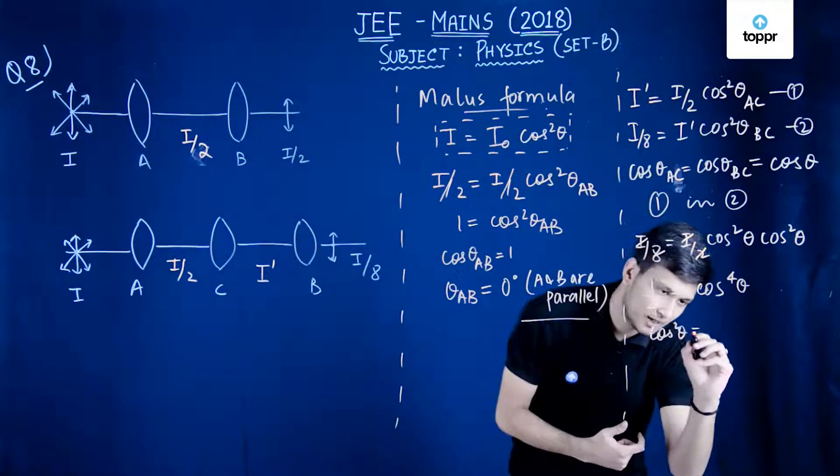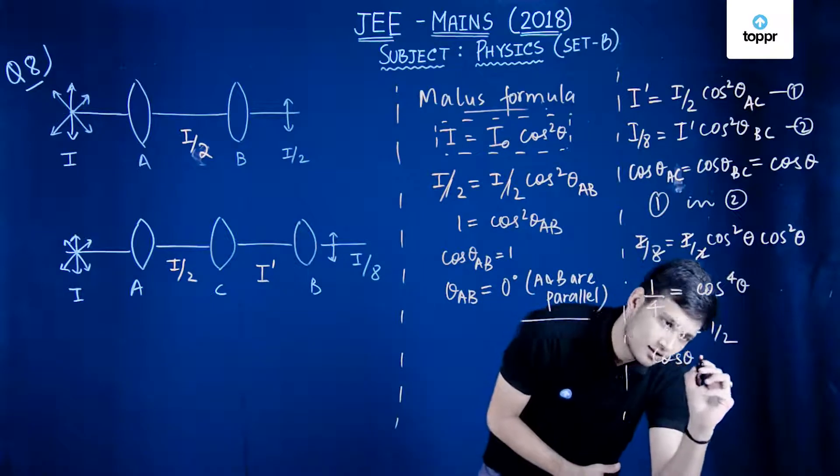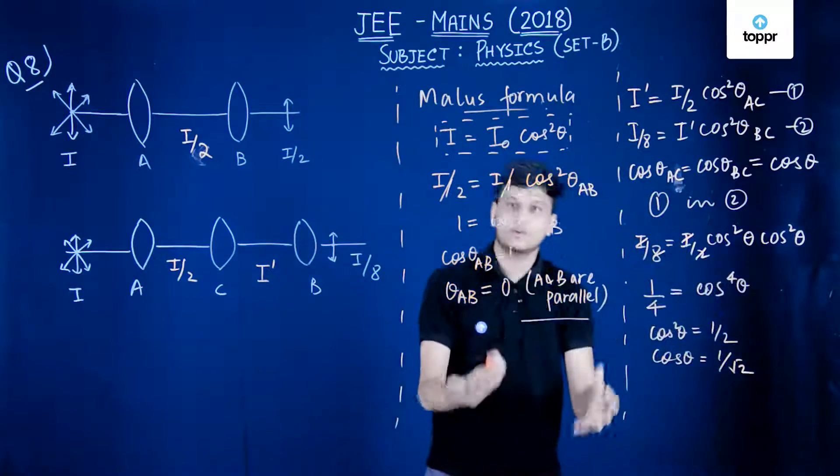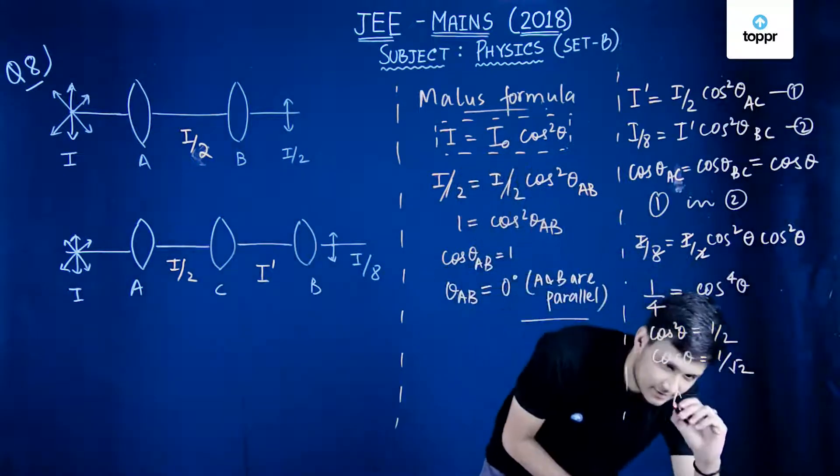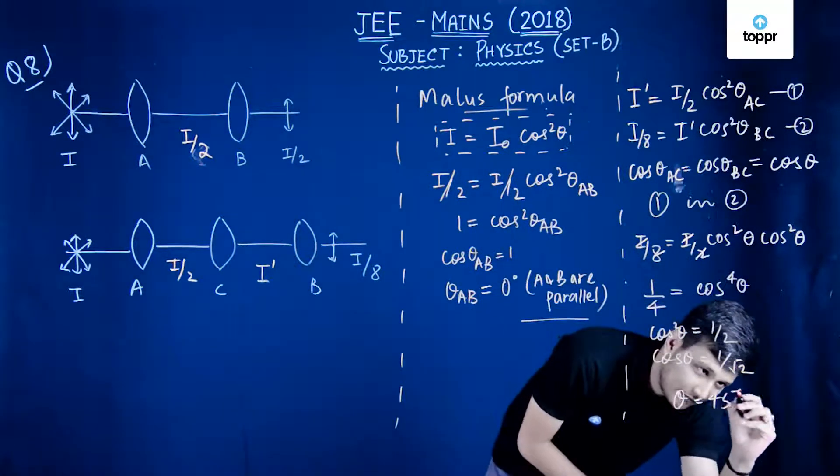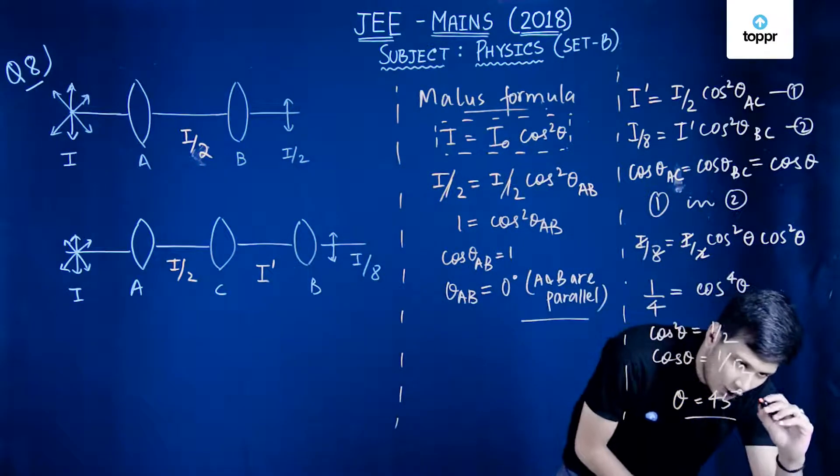So cos square theta would become half, cos theta would become 1 by root 2. We know the value of cos theta 1 by root 2 gives theta equals 45 degrees, and we have our final answer as theta equals 45 degrees or option 1 is correct.